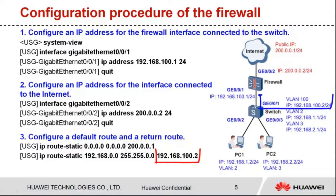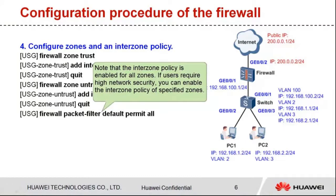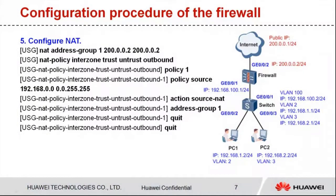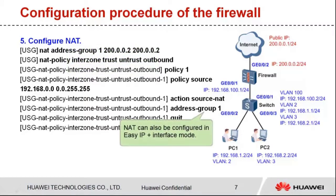The next hop address of the return route is 192.168.100.2, which is the IP address of the switch's uplink interface. Step 4: Configure zones and an inner zone policy. Note that the inner zone policy is enabled for all zones. If users require high network security, you can enable the inner zone policy of specific zones. Step 5: Configure NAT so that intranet users can access the internet. NAT is only valid for source IP addresses in network segment 192.168.0.0. NAT can also be configured in easy IP plus interface mode.